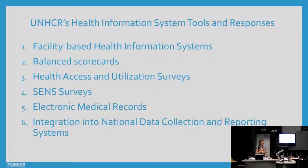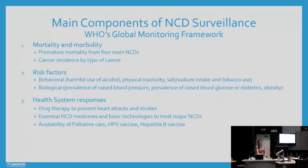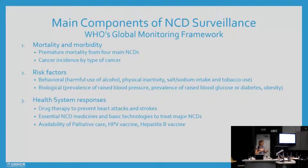I'll be starting with our health information system, and then moving on to national data collection and reporting systems. Before we start, we began to think: what are we actually comparing this to? What data should we be collecting? As far as we're aware, there's no standardised or agreed set of data that we should be collecting on NCDs in humanitarian settings. So for the purposes of this presentation, I decided to compare it with WHO's Global Monitoring Framework, which breaks NCD surveillance down into three areas: mortality and morbidity, risk factors — both behavioural and biological — and health system responses.